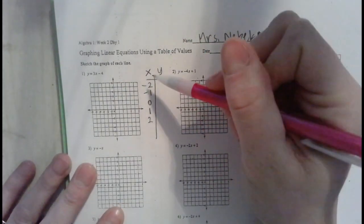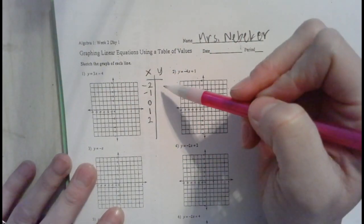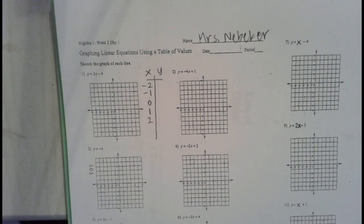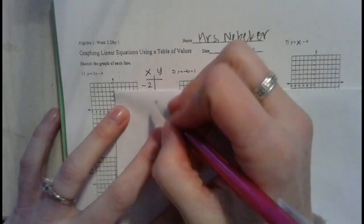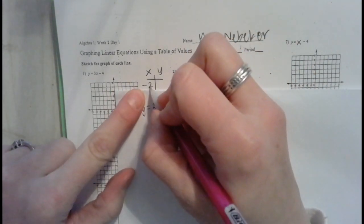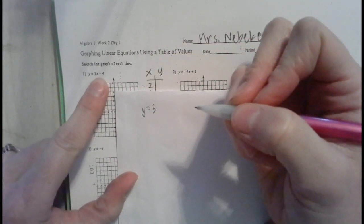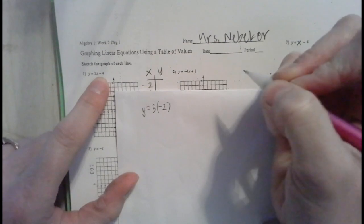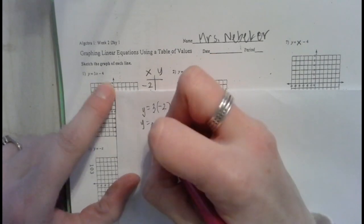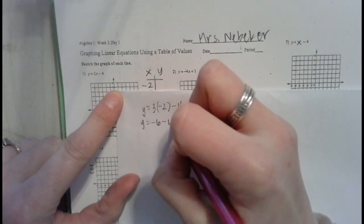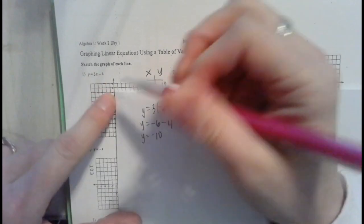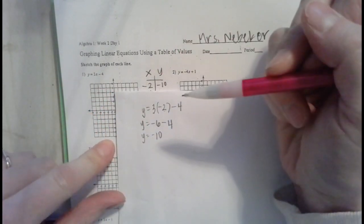We're going to plug each of these x values into our equation. Our first equation is y equals 3x minus 4. We start by replacing x with negative 2. When a number and a letter sit right next to each other, it means multiply. So 3 times negative 2 is negative 6, minus 4 gives us negative 10. Our graph doesn't go to negative 10, so that point won't fit, but we keep going.